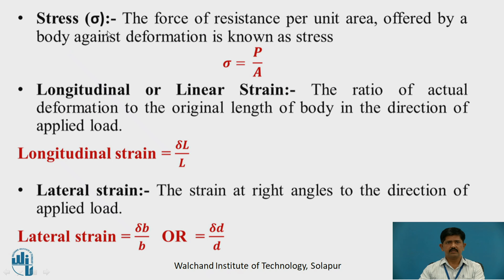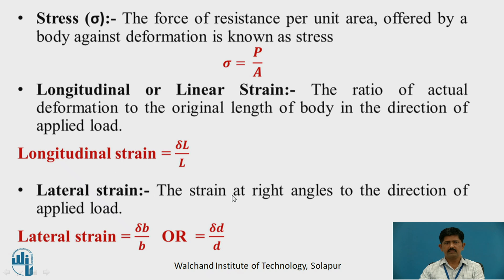Stress is denoted by sigma. It is the force of resistance per unit area offered by a body against deformation, so sigma is equal to P by A. Longitudinal or linear strain is the ratio of actual deformation to the original length of a body in the direction of the applied load: longitudinal strain equals delta L by L. Lateral strain is the strain at right angle to the direction of applied load, in the direction of breadth and depth, so it is delta B by B or delta D by D.